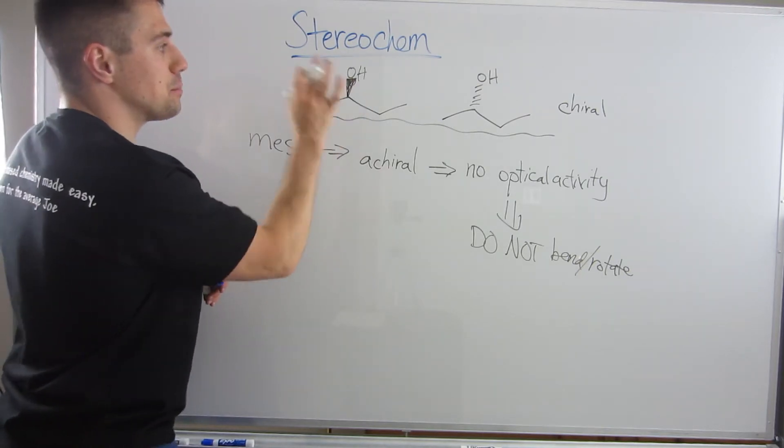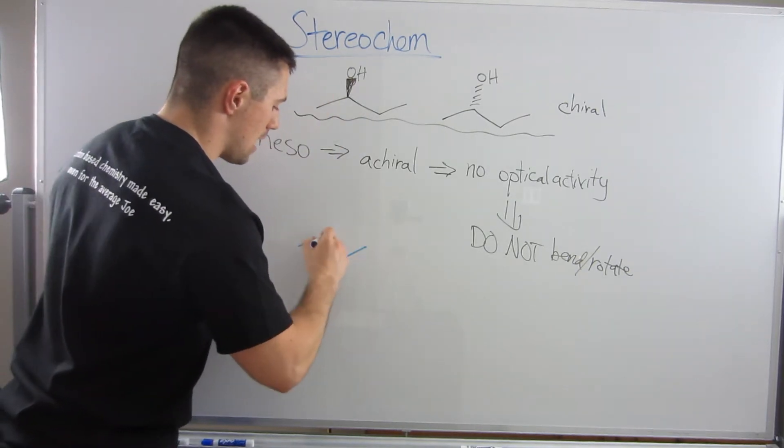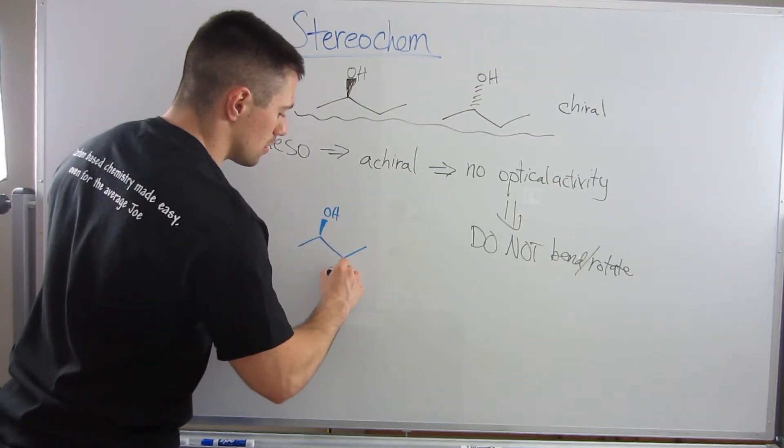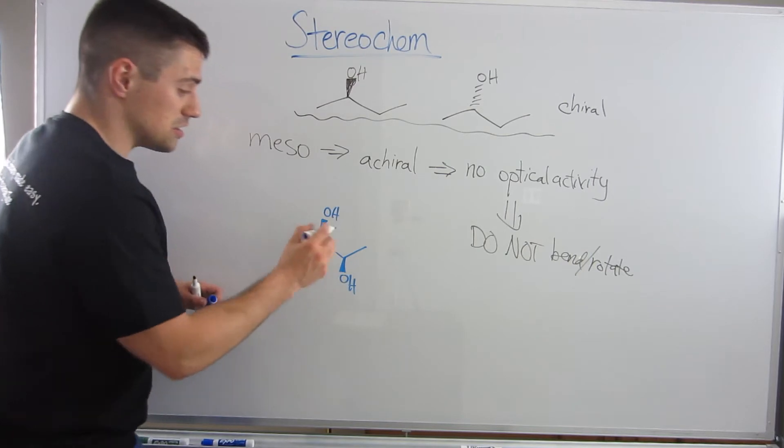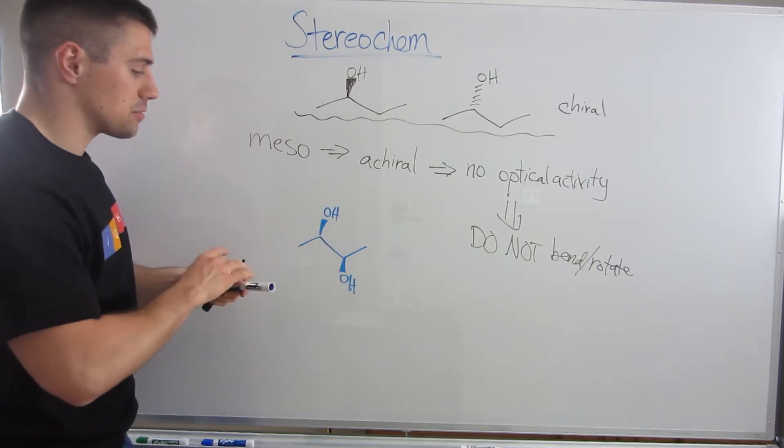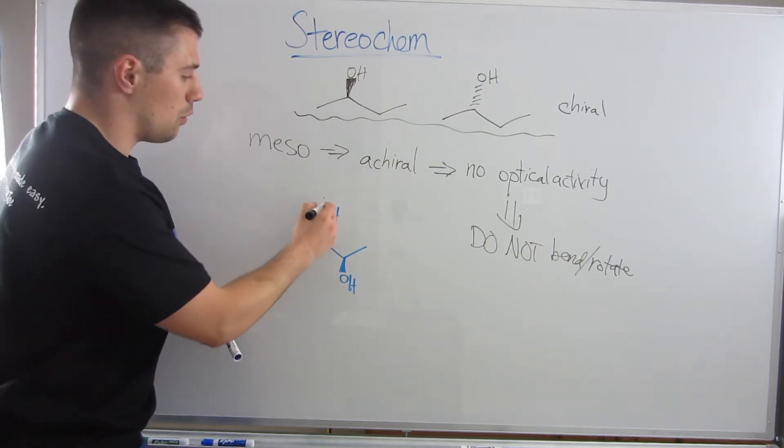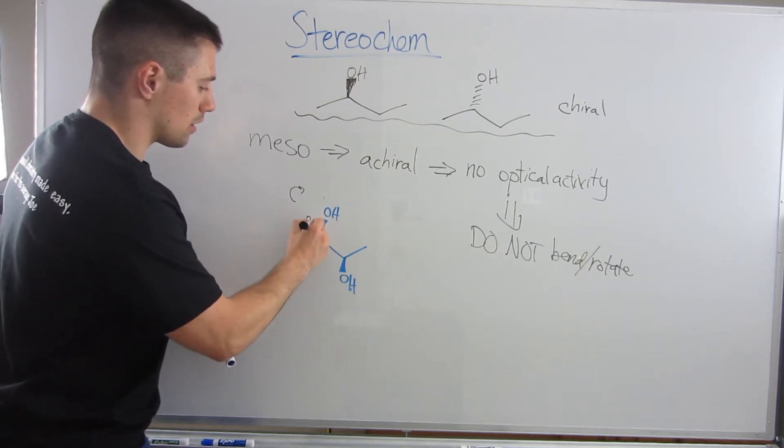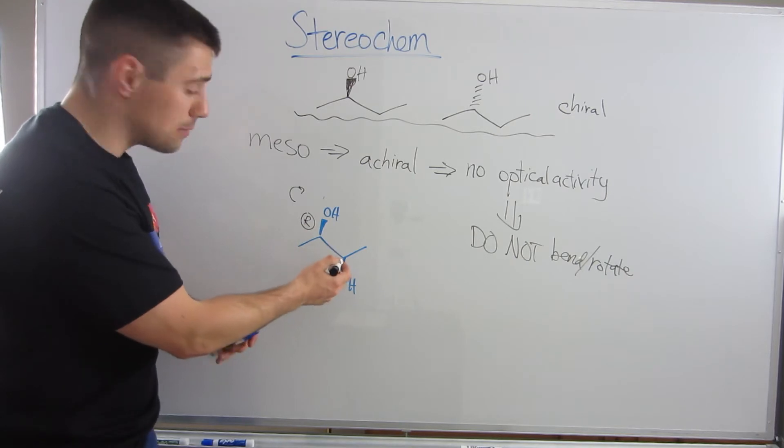If I even take this simple structure like this and I were to just add another stereocenter like this, think about this. This is still an R stereocenter. 1, 2, 3. This still is R. And if I assign stereochemistry here, 1, 2, 3.